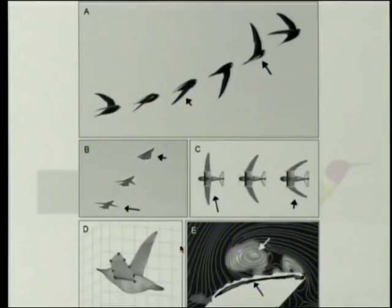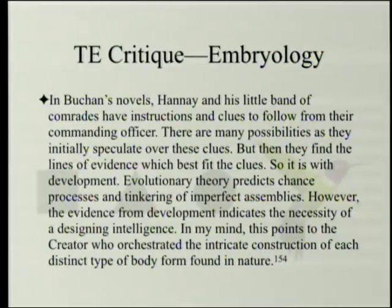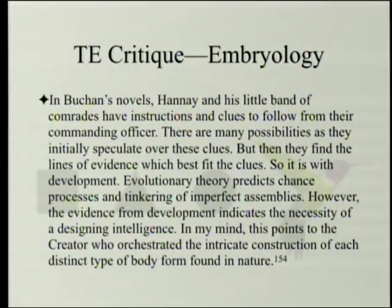The Swift has variable wings that are sometimes swept back and sometimes raised forward in maneuvering — much like some modern jets. Shown also are the hummingbird and the circulation over a moth's wing, which is far more complex than it might appear. In Buchan's novels, Hannay and his comrades have instructions and clues to follow, and find the lines of evidence which best fit the clues. So it is with development: evolutionary theory predicts chance processes and tinkering of imperfect assemblies, but the evidence from development indicates the necessity of a designing intelligence. In the author's view, this points to the Creator who orchestrated the intricate construction of each distinct type of body form found in nature.